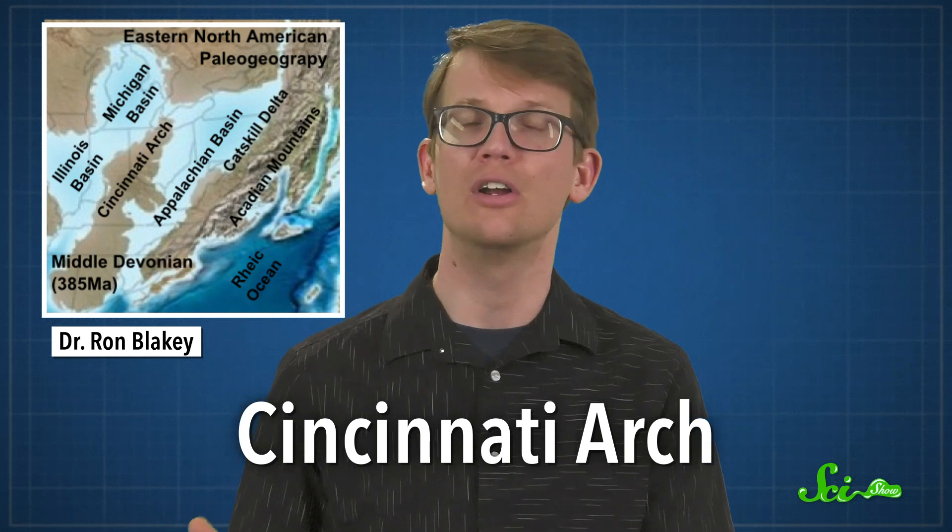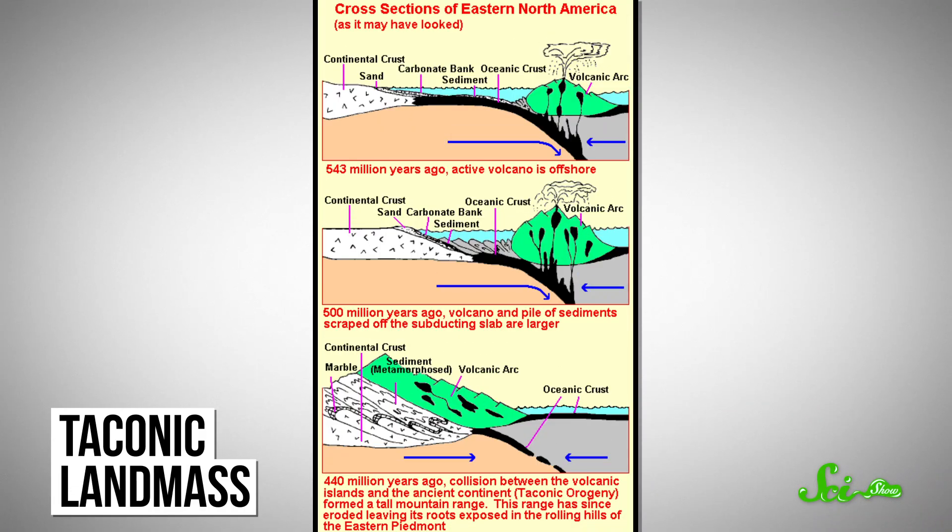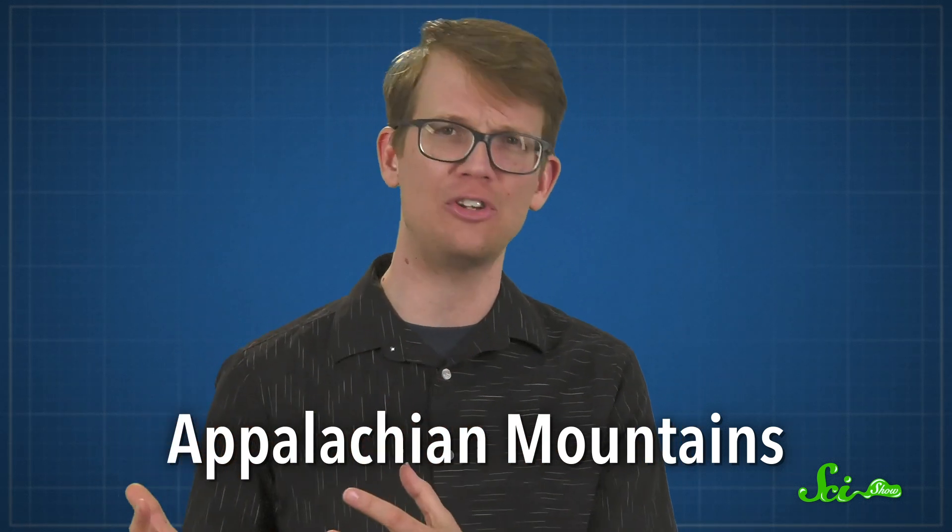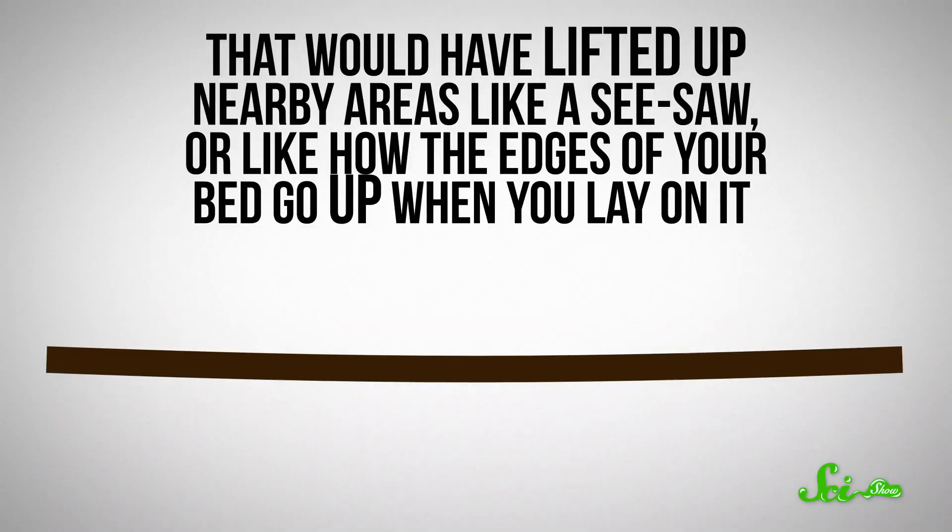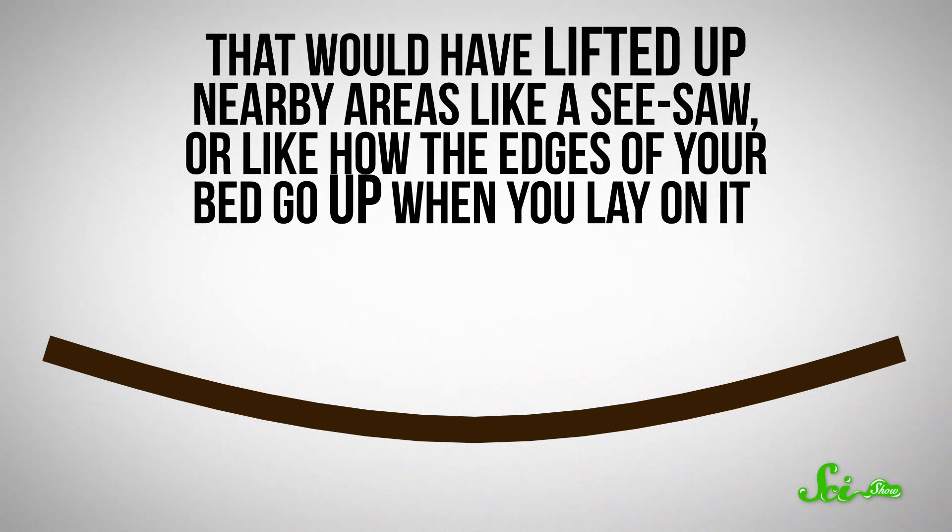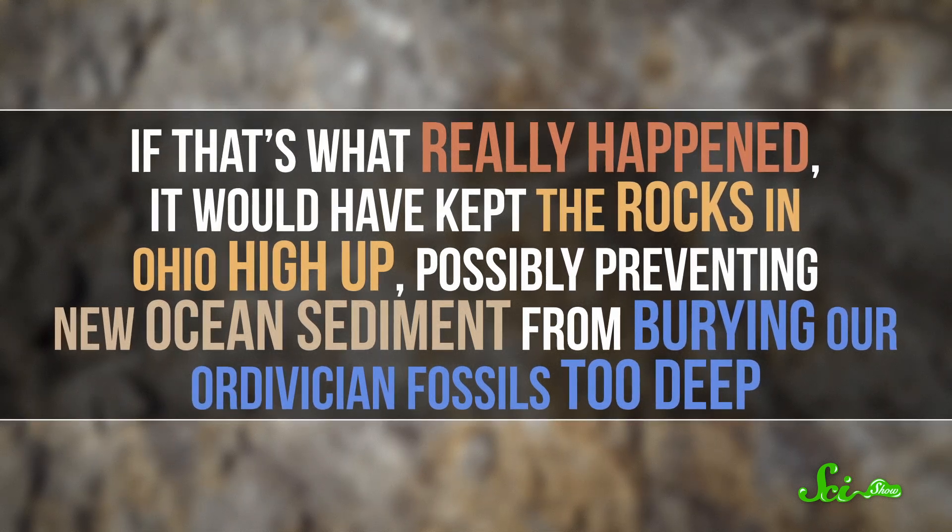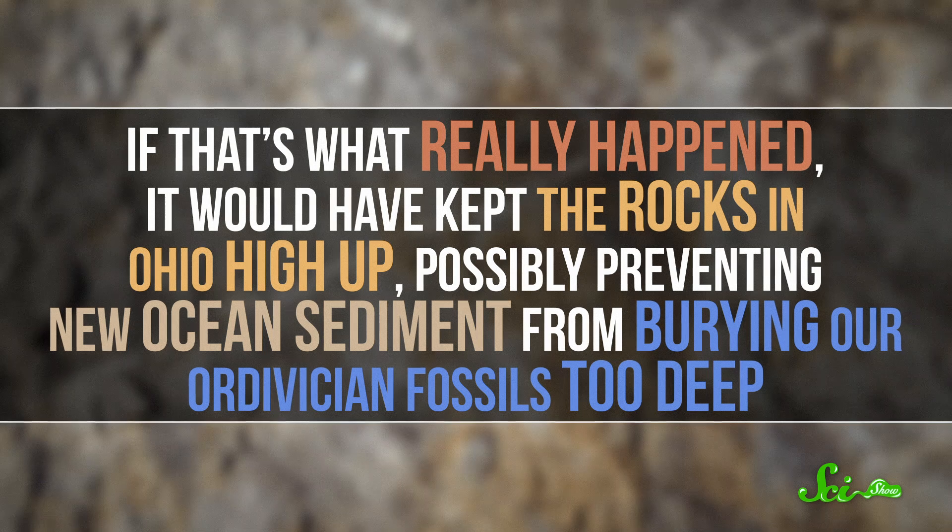The most amazing part of this story, though, isn't the creatures that existed in the Ordovician. It's the fact that all of these fossils and the story they tell would have been completely lost to us if it hadn't been for a geologic feature called the Cincinnati Arch. Researchers are still studying how it formed, but one possible mechanism has to do with the tectonic landmass to the east of this area. It was a series of islands and volcanoes that eventually went on to become part of the giant geological mishmash that became the Appalachian Mountains. And it turns out that the sheer weight of that tectonic traffic jam may have actually pushed down the Earth's crust. That would have lifted up nearby areas like a seesaw, or like how the edges of your bed go up when you lay on it. If that's what really happened, it would have kept the rocks in Ohio high up, possibly preventing new ocean sediment from burying our Ordovician fossils too deep.